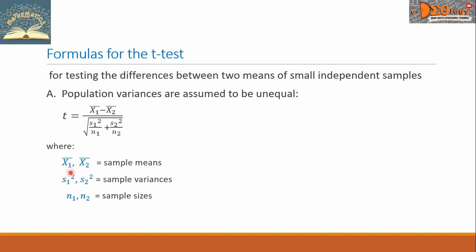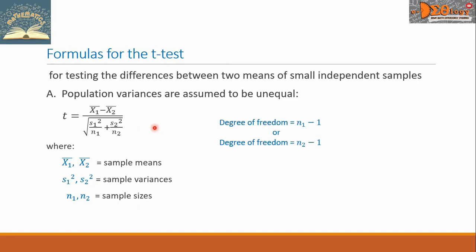Here, x-bar sub 1 and x-bar sub 2 are the sample means. S sub 1 squared and S sub 2 squared are the sample variances, while N sub 1 and N sub 2 are the sample sizes. Since we are using the t-test, we need the degree of freedom, which can be N sub 1 minus 1 or N sub 2 minus 1 — we use whichever is smaller.